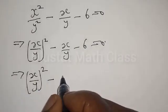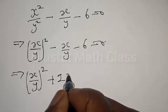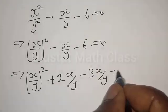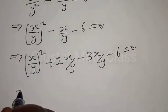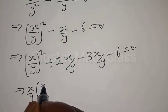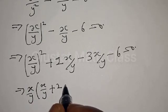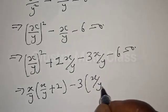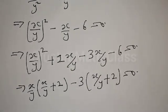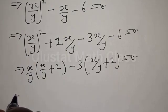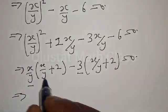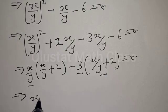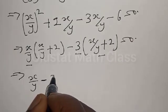This gives us x over y squared plus 2 times x over y minus 3 times x over y minus 6 equal to zero. This implies x over y times x over y plus 2, minus 3 times x over y plus 2, equal to zero. Factoring gives us x over y minus 3, times x over y plus 2, equal to zero.